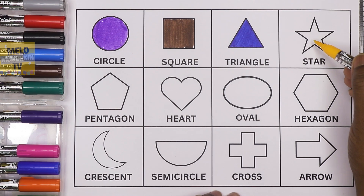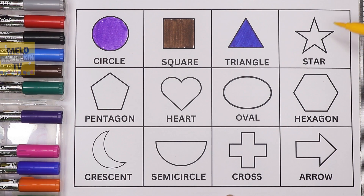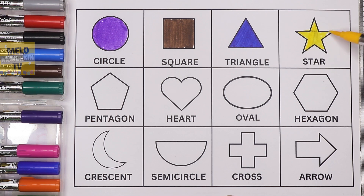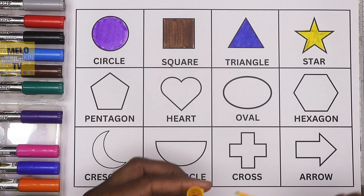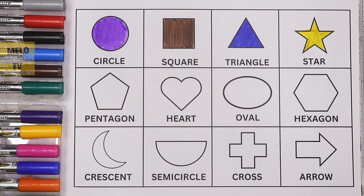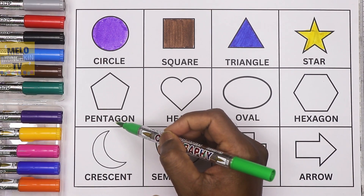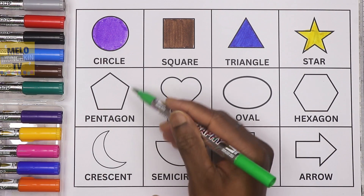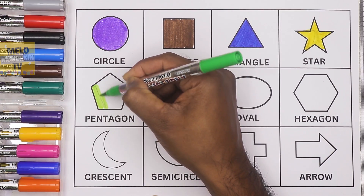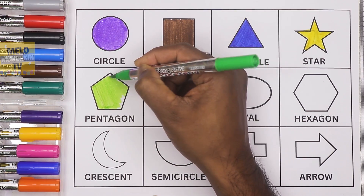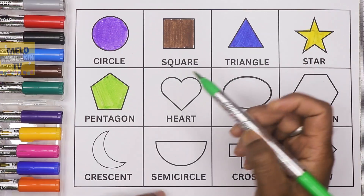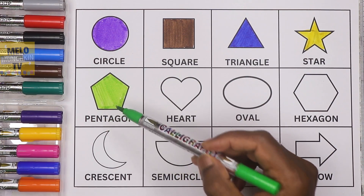Next I'll take yellow color to color this shape. This is a star. So this is now a yellow star. Next I'll take light green color to color this shape. This is a pentagon — pentagon has five sides. So this is now a light green pentagon. Very good.